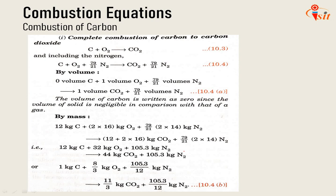Next is the combustion of carbon. There are two categories: complete combustion of carbon, which converts to carbon dioxide (C + O2 → CO2), and incomplete combustion. Incomplete combustion occurs due to insufficient supply of oxygen. Similarly, including nitrogen in the equation, we add (79/21)N2 to both sides.